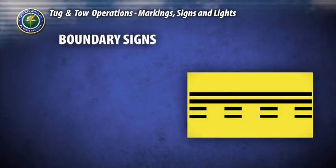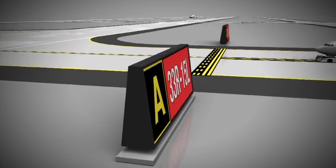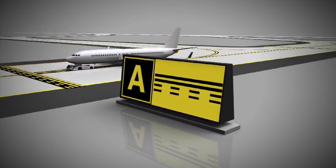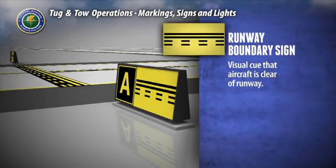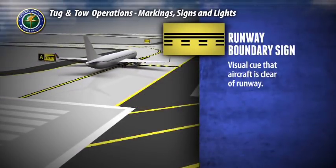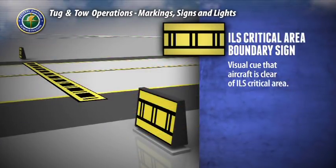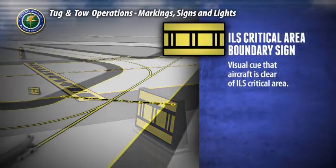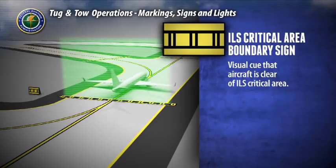Boundary signs are used to identify the boundary of the runway safety area and the ILS critical area. These signs are visible when exiting these areas and are posted on the reverse side of mandatory hold position signs. The runway boundary sign faces the runway and is visible upon exiting the runway — it is located next to the yellow holding position marker and provides a visual cue that the aircraft is clear of the runway. The ILS critical area boundary sign is located next to the ILS holding position marking and is used to determine when the aircraft is clear of the ILS critical area.